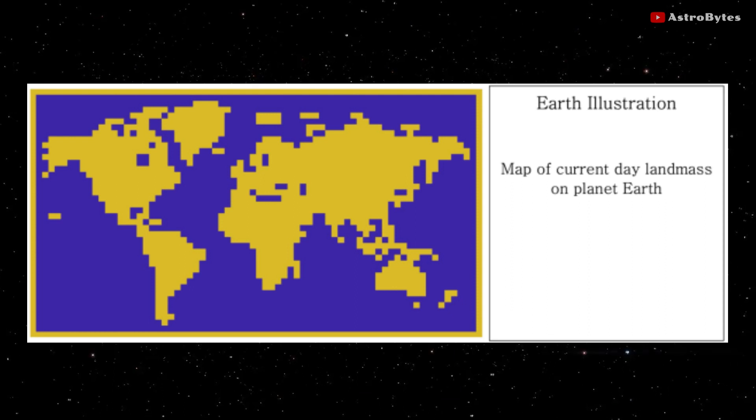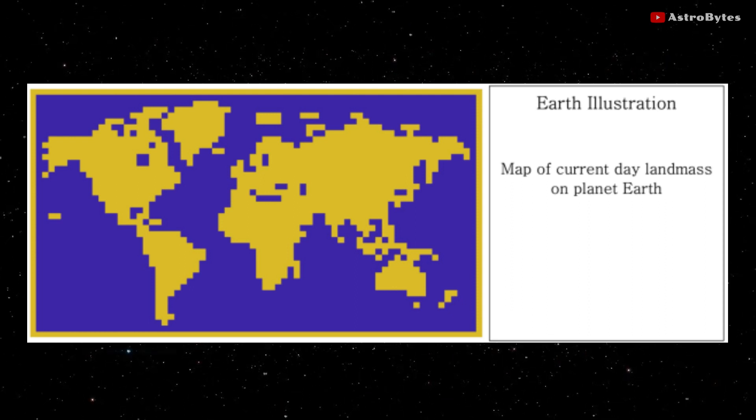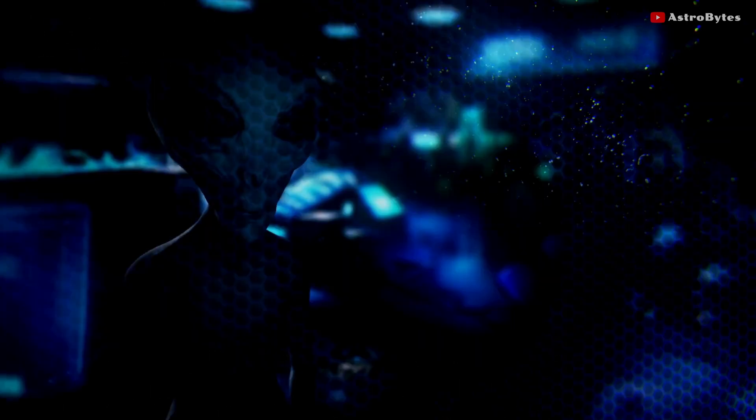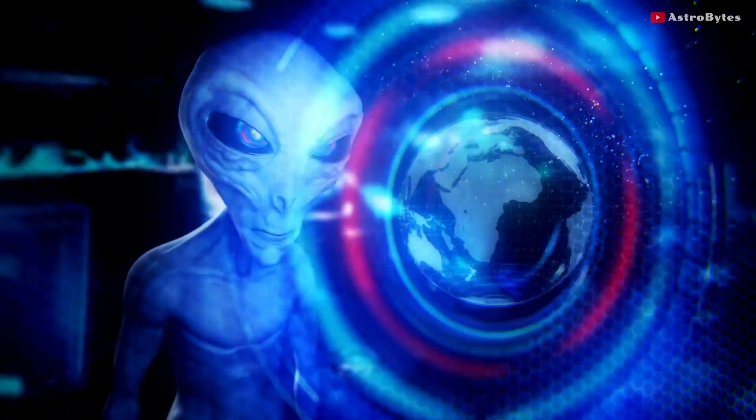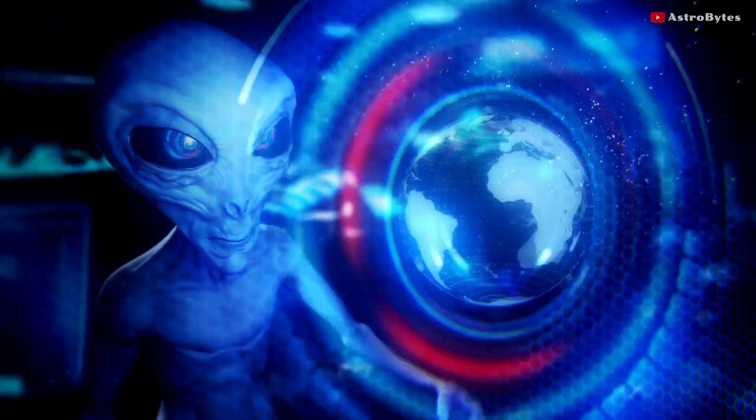It also contains a digitized map of Earth with relative proportions of land to water. This will provide aliens the necessary information to make contact with humanity, either by sending a follow-on transmission to Earth.